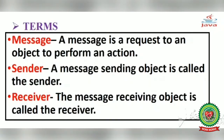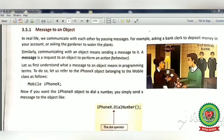First, let's discuss some terms related to messages. A message is a request to an object to perform an action — like telling your friend to give you a copy. The message-sending object is called the sender, and the message-receiving object is called the receiver.